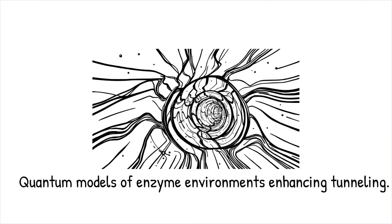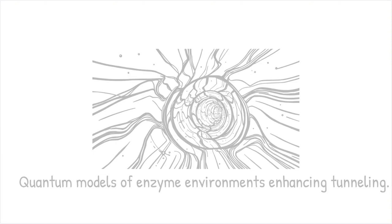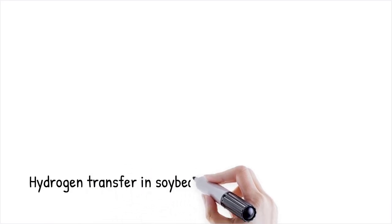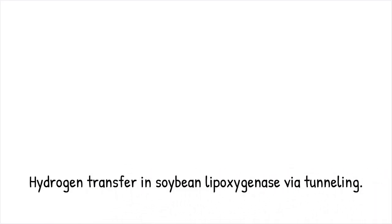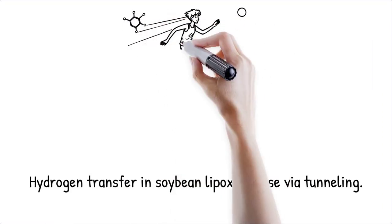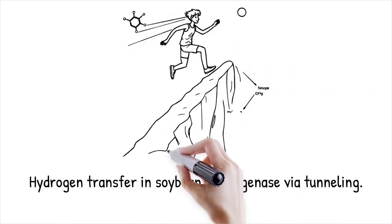For example, in soybean lipoxygenase, hydrogen transfer happens at a rate that suggests quantum tunneling, confirmed by the unusual isotope effects on reaction speed. It's like skipping a steep hill by instantly teleporting to the other side, rather than climbing over it.